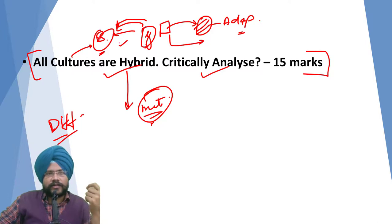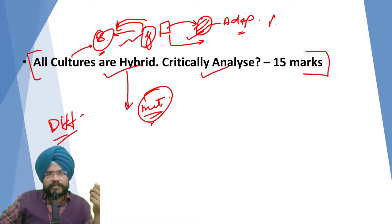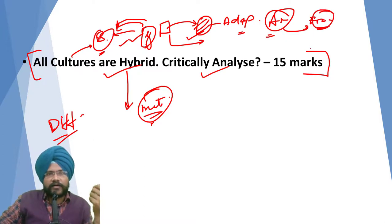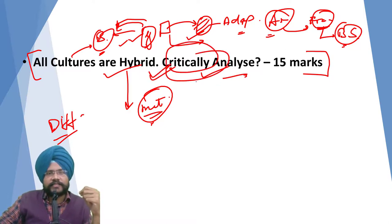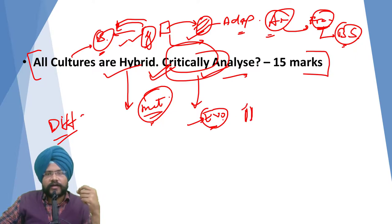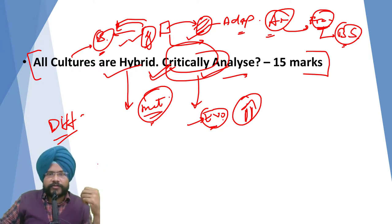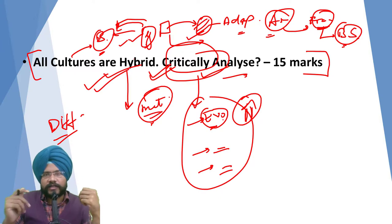For each school you write about, also include the relevant fieldwork. Next is the American school — Franz Boas applied the method of historical particularism and showed that assimilation is happening. Include Ruth Benedict's fieldwork alongside that. Since the question says 'critically analyze', also critically mention the evolutionist school's perspective as a counter, then the British diffusionist school, and then the American criticism — this is how you should have written the answer.